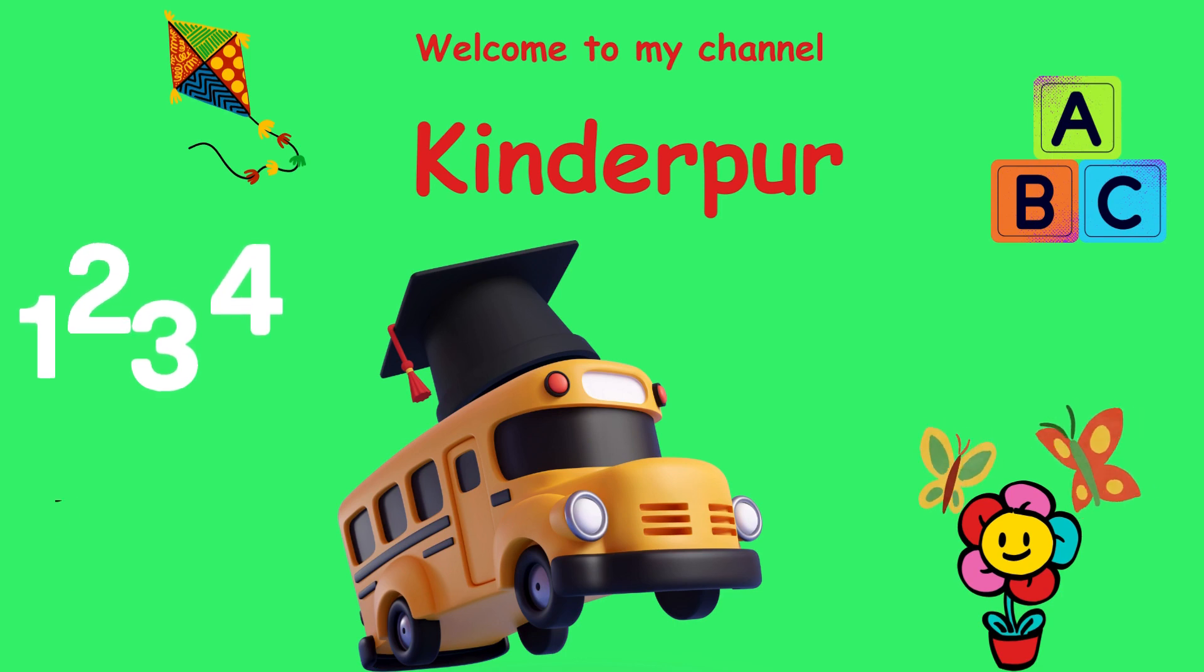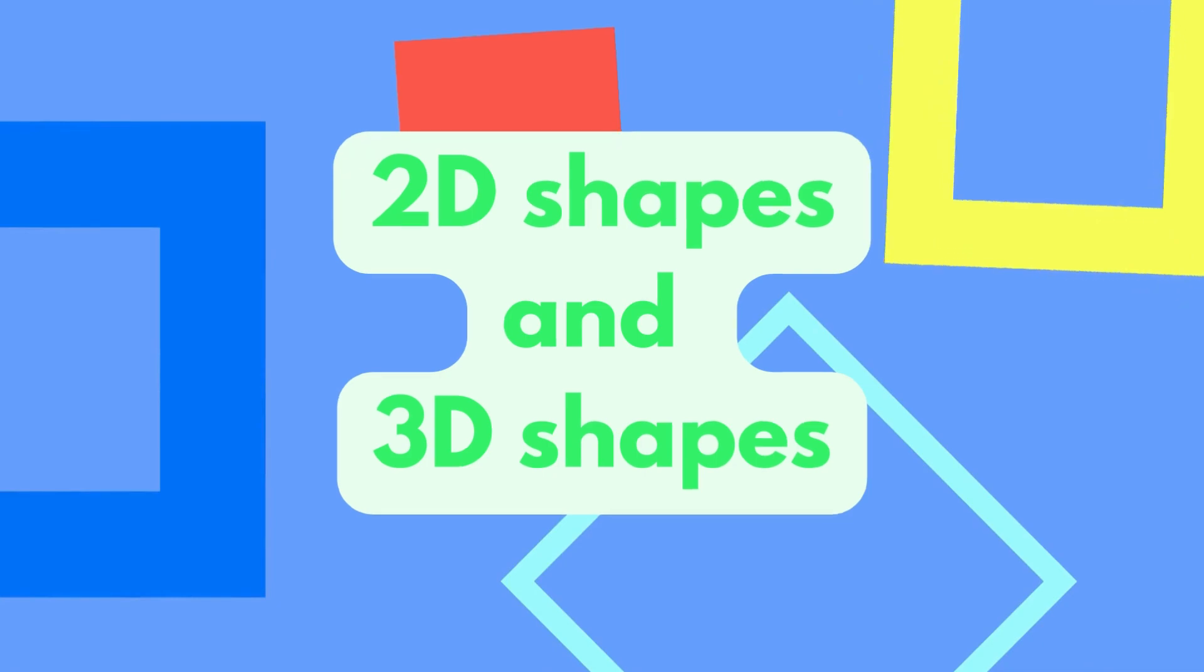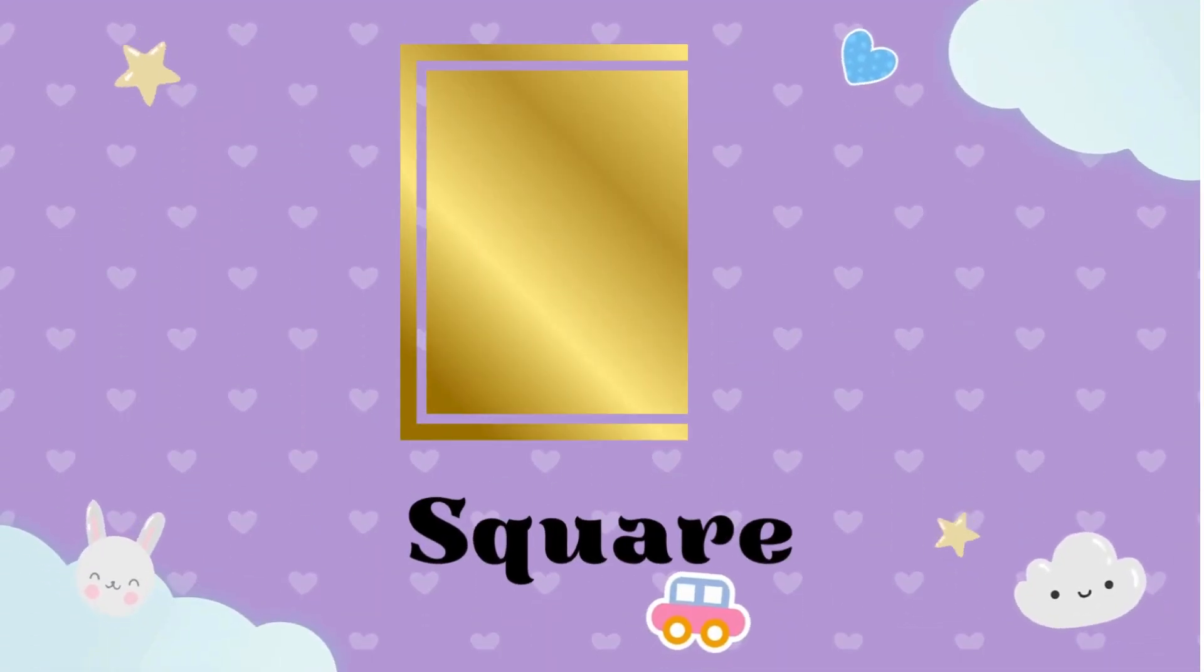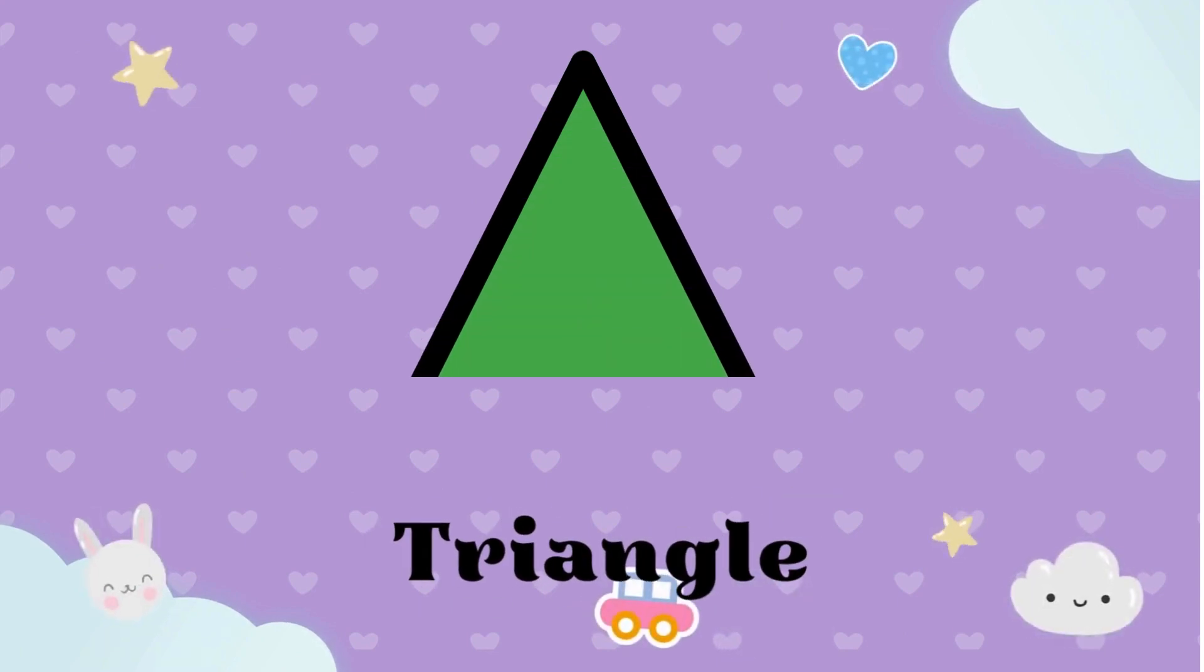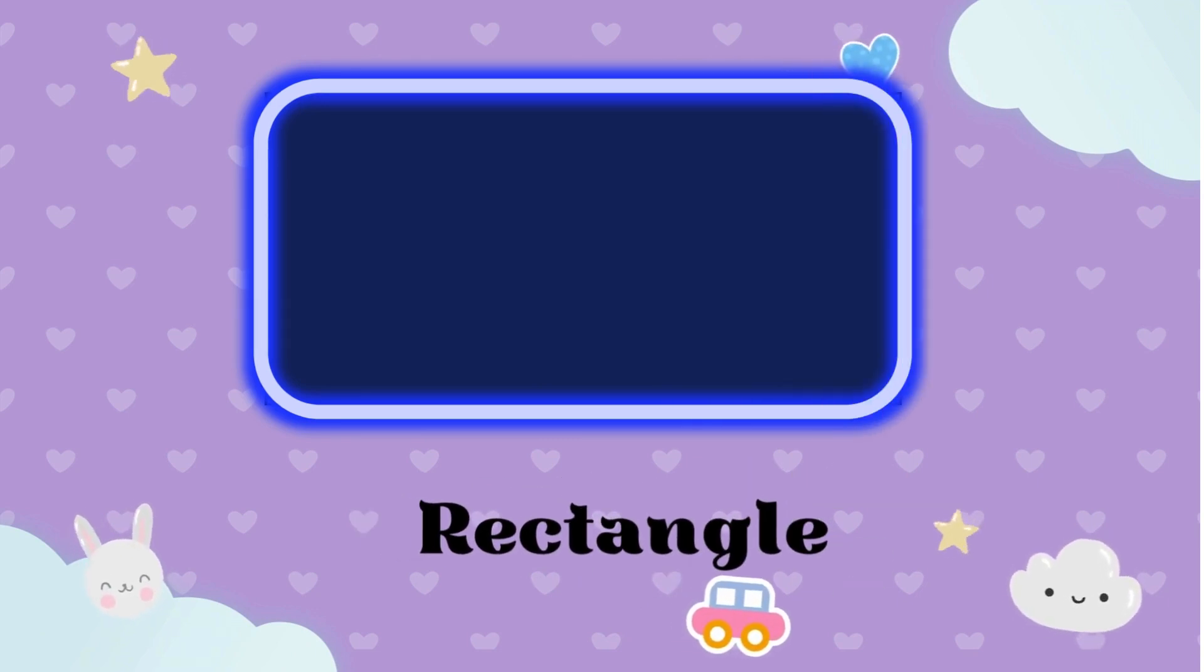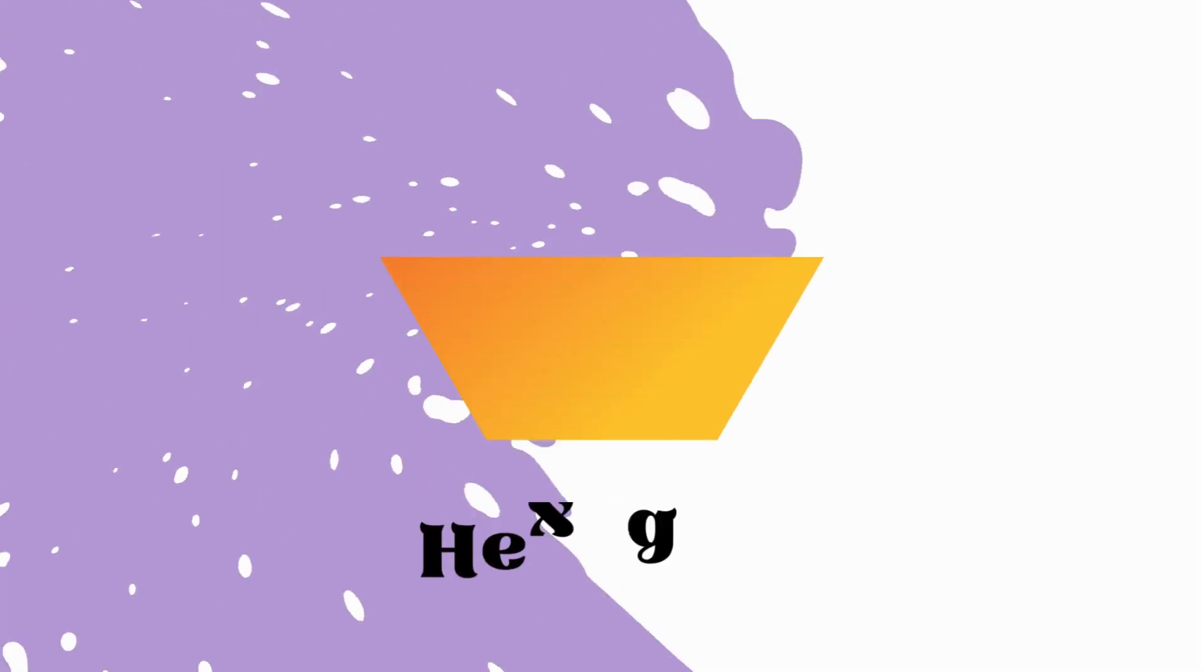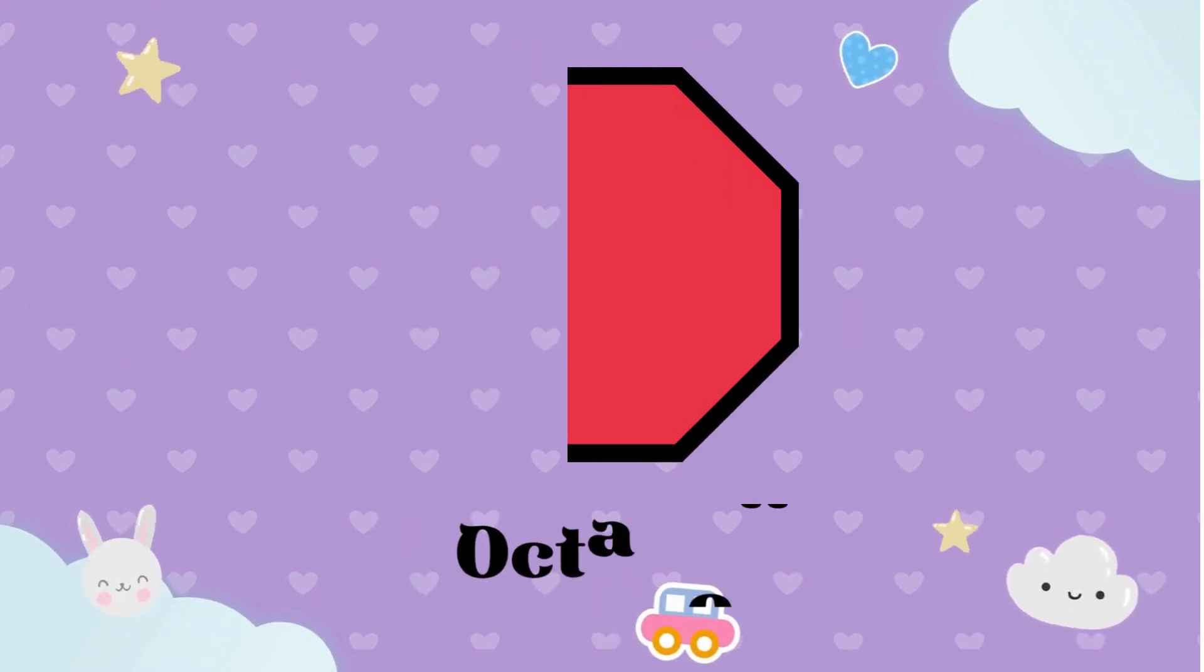Welcome to my channel Kinder Poor. Now we will see the different 2D shapes and 3D shapes. Circle, square, triangle, rectangle, pentagon, hexagon, octagon.